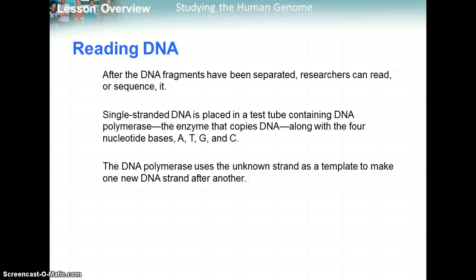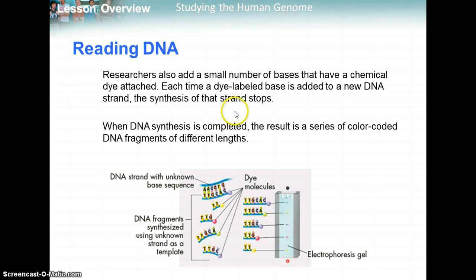After DNA fragments have been separated, researchers can read or sequence them — figuring out what order of bases they have. Single-stranded DNA is placed in a test tube containing DNA polymerase. The enzyme then copies DNA along with the four nucleotide bases A, T, G, and C. The DNA polymerase uses the unknown strand as a template to make one new strand of DNA after another, just like in replication. Researchers can also add a small number of bases that have a chemical dye attached. Each time a dye-labeled base is added to a new DNA strand, synthesis of the strand stops. So C bases might be purple-dyed, A bases green-dyed, Gs red, and Ts yellow.